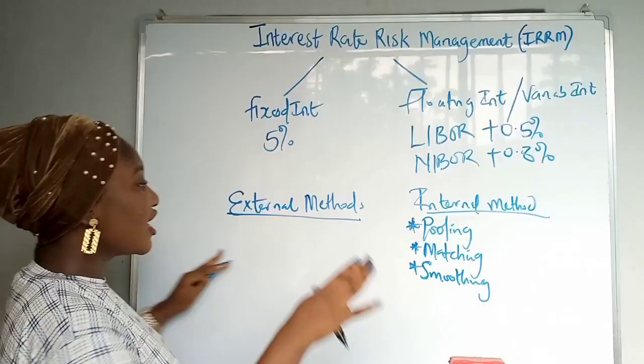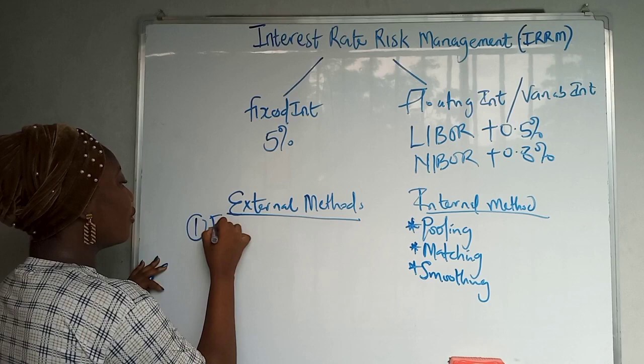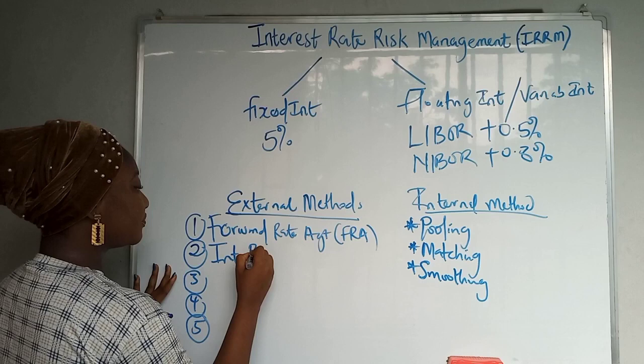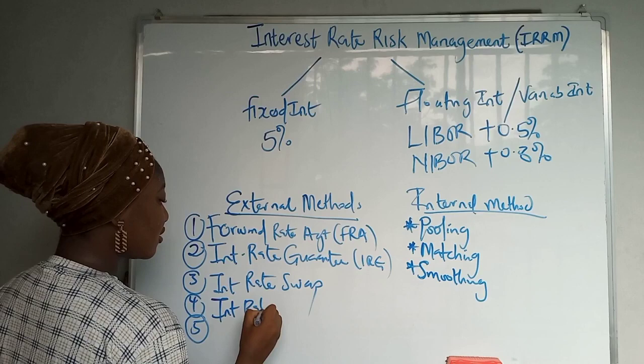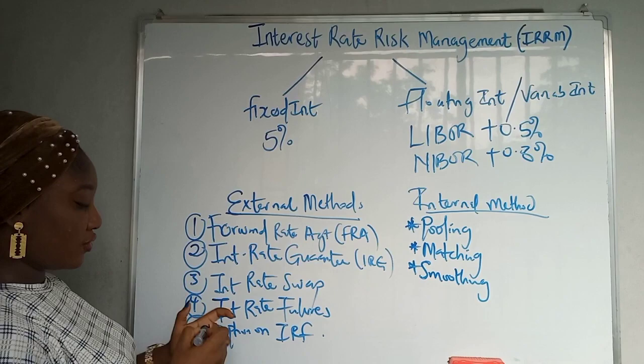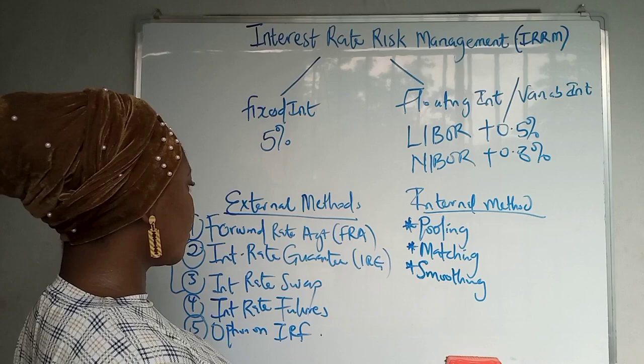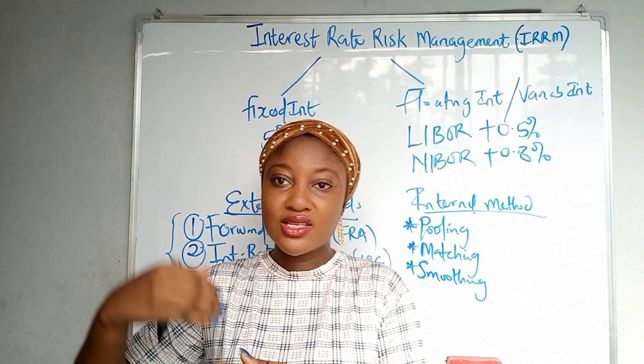Under the external method you have your forward rate agreement, called FRA. You also have interest rate guarantee, interest rate swap, interest rate futures, and options on interest rate futures. In this class we are going to focus on the first three, and the next class will cover the last two. Let's start with forward rate agreements.